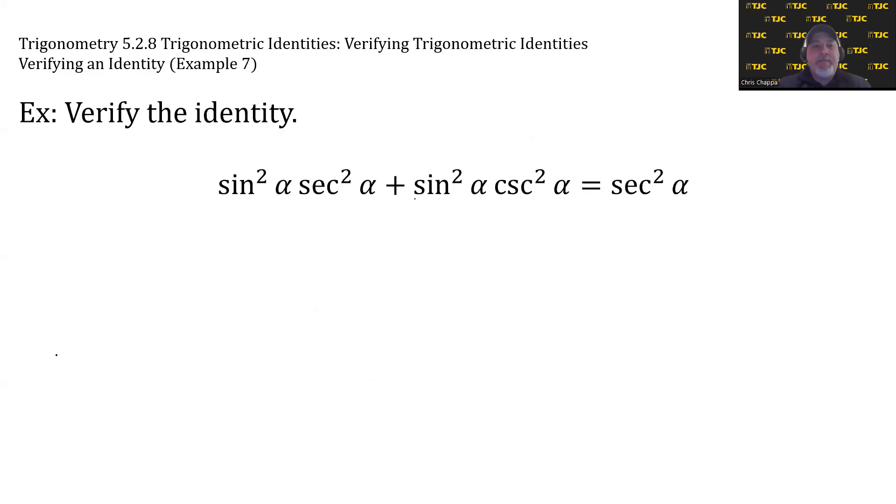All right, let's verify the identity. Sine squared of alpha, secant squared of alpha, plus sine squared of alpha, cosecant squared of alpha, equals secant squared of alpha.